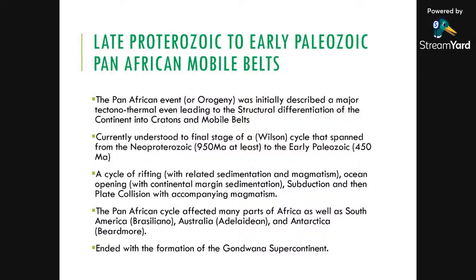You're obviously dealing with the cycle of rifting with sedimentation and magmatism, ocean opening, subduction and plate collision, which is accompanied by magmatism. When you look at the rocks of the mobile belts, you would see the imprints of rocks that came from subduction and affected other areas including South America, Australia, and Antarctica.